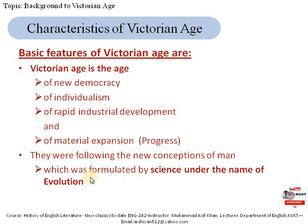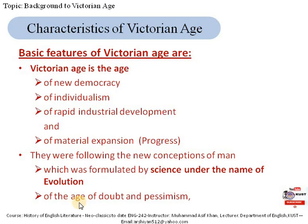The theory of evolution was first formulated in Darwin's book 'On the Origin of Species,' published in 1859. This theory states that evolution is the process by which organisms change over time as a result of changes in physical and behavioral traits. Man and the whole universe were now considered products of evolution. This gave rise to doubts, which is why the Victorian age is also called the 'Age of Doubt,' and because of that doubt it is also named the 'Age of Pessimism.'